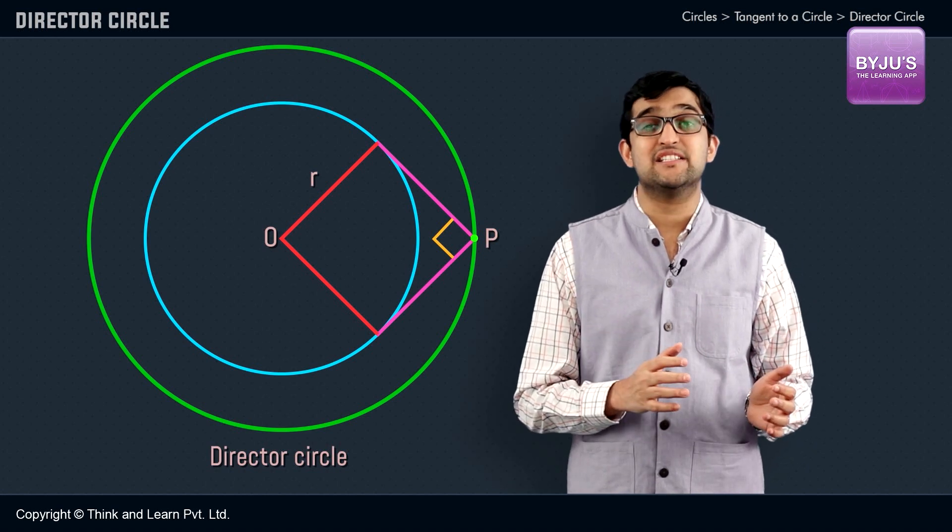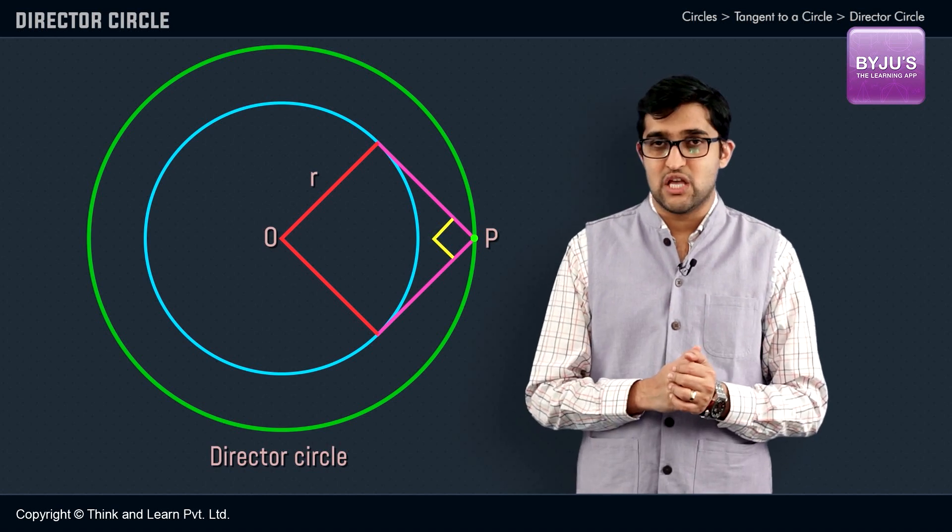But as far as circles are concerned, we look into how the equation of director circles comes about. The tangents make right angles with each other, so